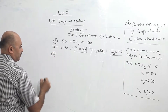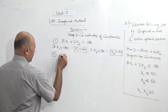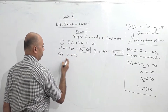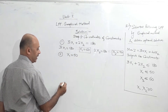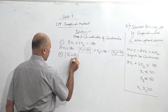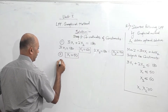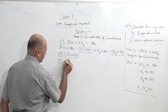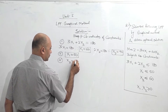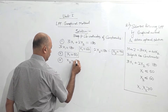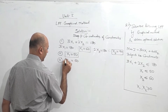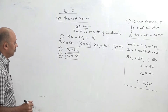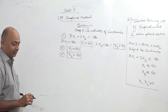Second constraint: again convert to equality, x1 equal to 50. Here we get the value directly. So this is our second constraint coordinate. And third constraint coordinate, again convert to equality, x2 equal to 60. Here also we get it directly. So we get coordinate values of all the constraints.